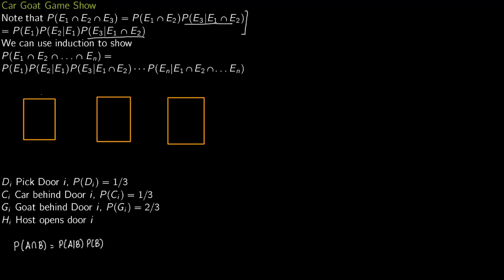The game show has three doors: door 1, door 2, door 3. Behind two doors there is a goat and behind one door there is a car. The contestant is asked to pick a door. The contestant could pick door 1, and the host then opens a door. He cannot open the door the contestant has picked. He can open any other door — door 2 or door 3 — and shows that there is a goat behind it.